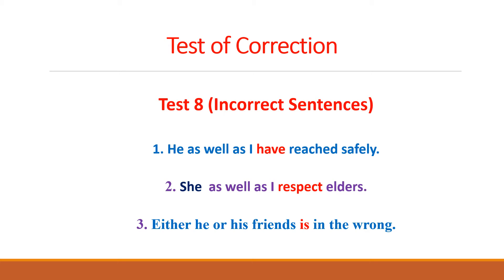As in sentence number 1, the subjects 'she' and 'I' are also connected with 'as well as.' This is to remind you of the rule for using a verb or helping verb when two pronouns or subjects are connected with 'as well as.' Similarly, sentence number 3: 'Either he or his friends is in the wrong.' Here 'is' has been highlighted, showing that there is something wrong with it, since the subjects are connected with 'either...or,' raising the question of what rule applies when two subjects are connected with 'either...or' or 'neither...nor.'